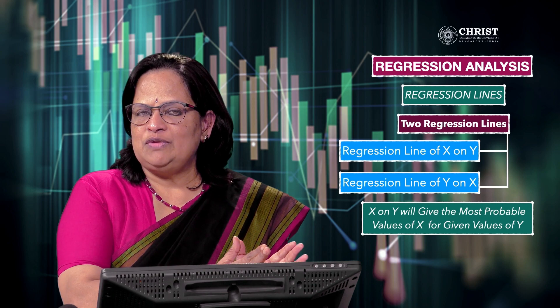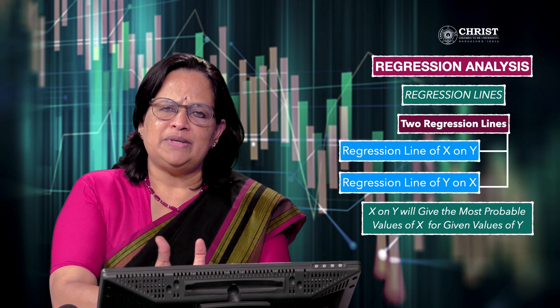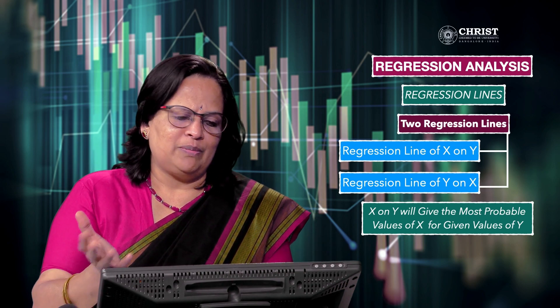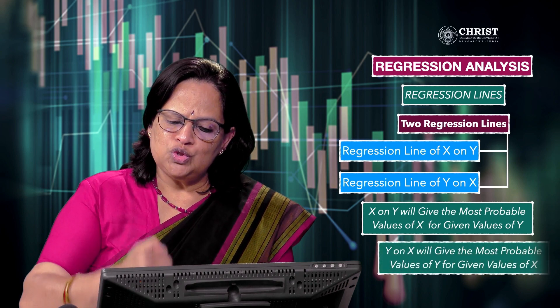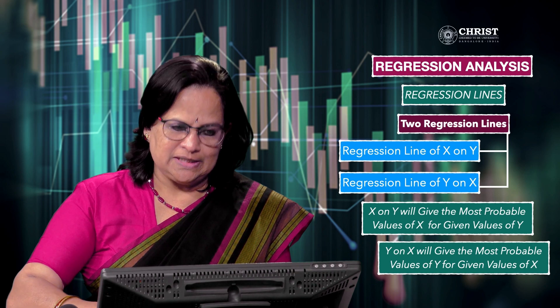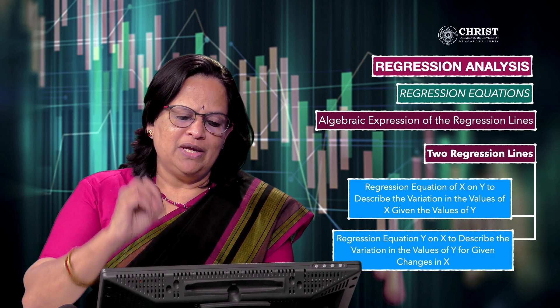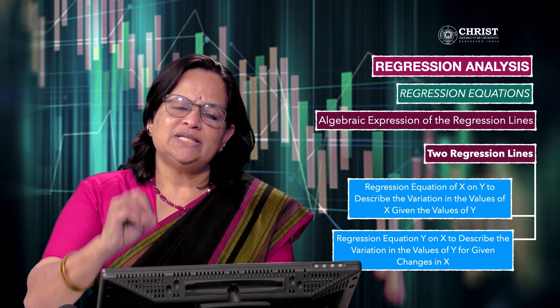There are always two variables — income and expenditure, income and income tax, or income and savings. Given one variable, you can predict the other. Similarly, y on x gives the most probable values of y for the given values of x. There are two regression equations corresponding to the two regression lines. Regression equations are the algebraic expressions of the regression lines. Regression equation x on y describes the variation in the values of x given the values of y, while regression equation y on x describes the variation in the values of y for given changes in x.